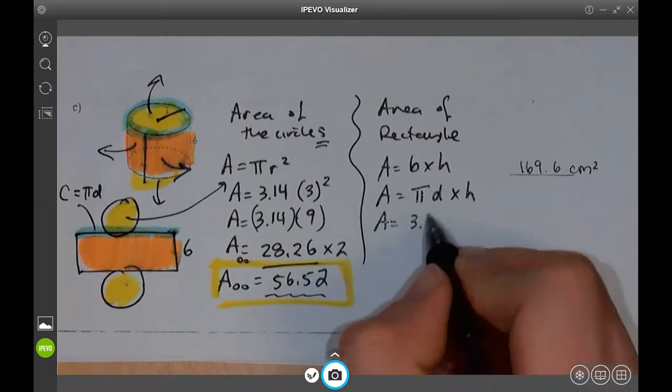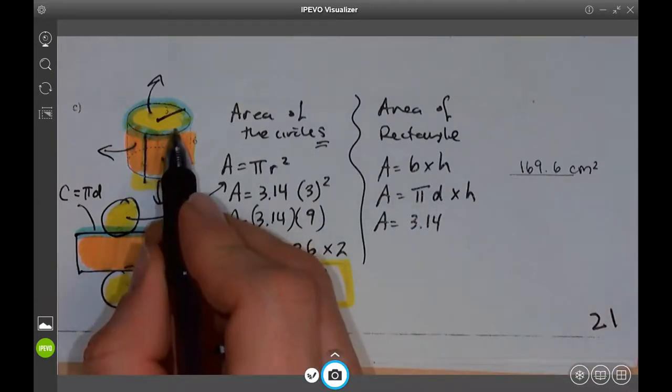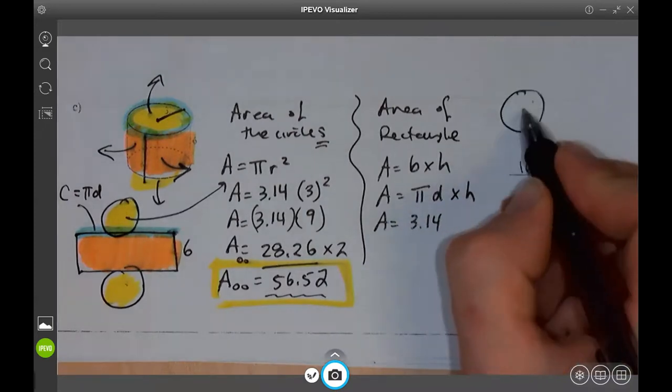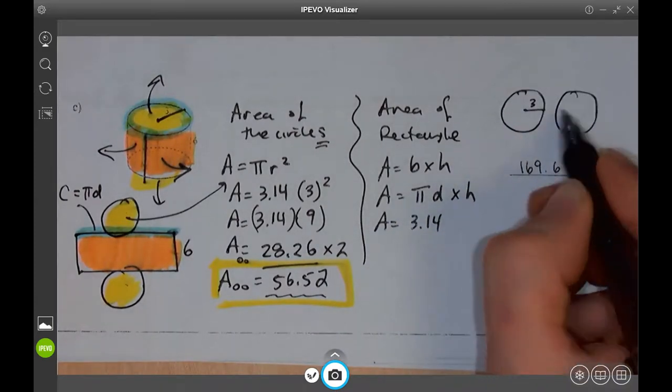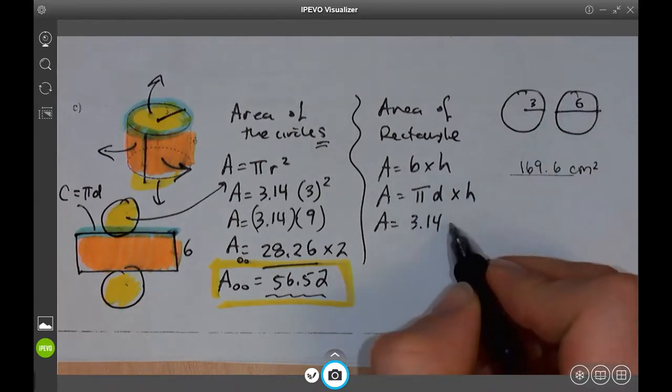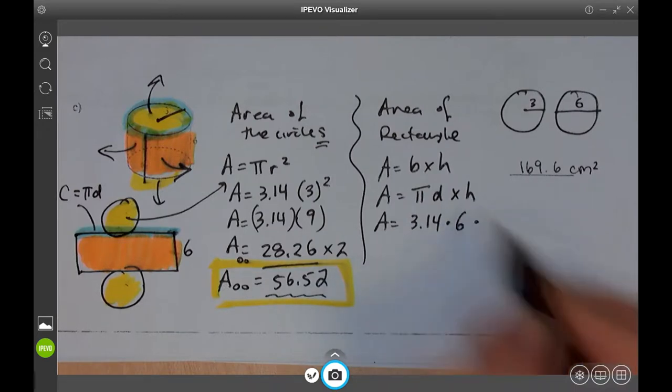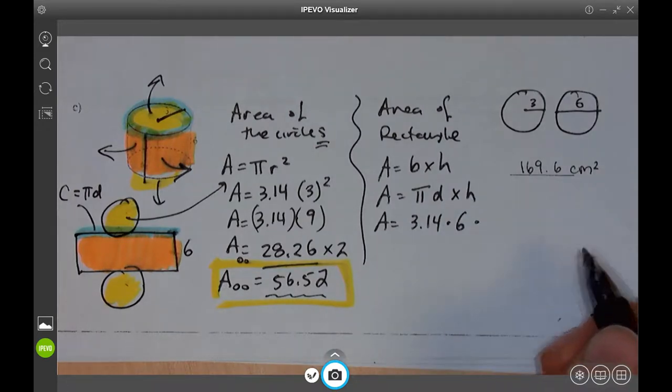What's pi? 3.14. What was our d again? Well, our d over here, it said that the radius is three. If I go all the way across, what is my diameter? It's going to be six. So we got multiply by six, multiply by what's h. H was six.